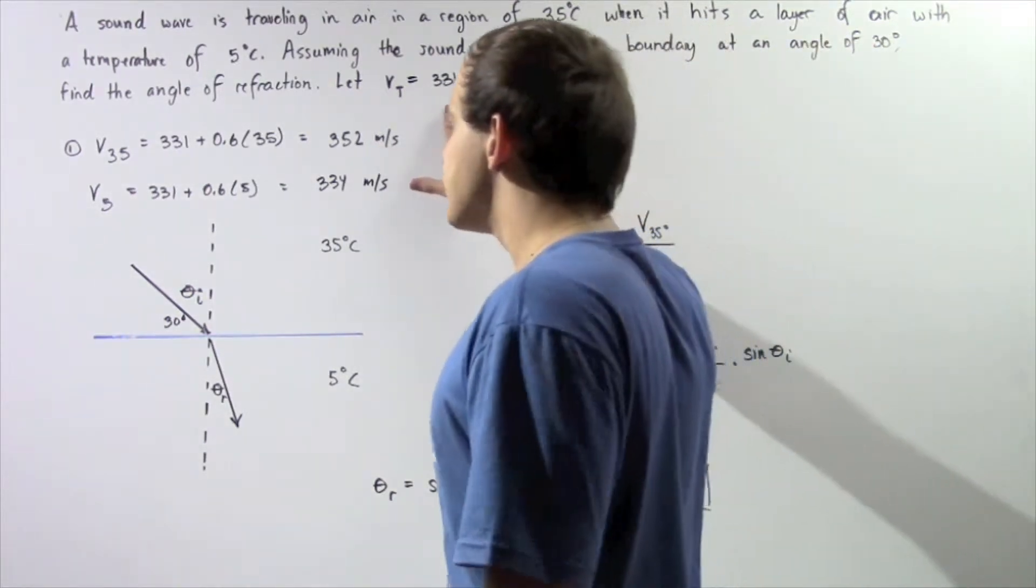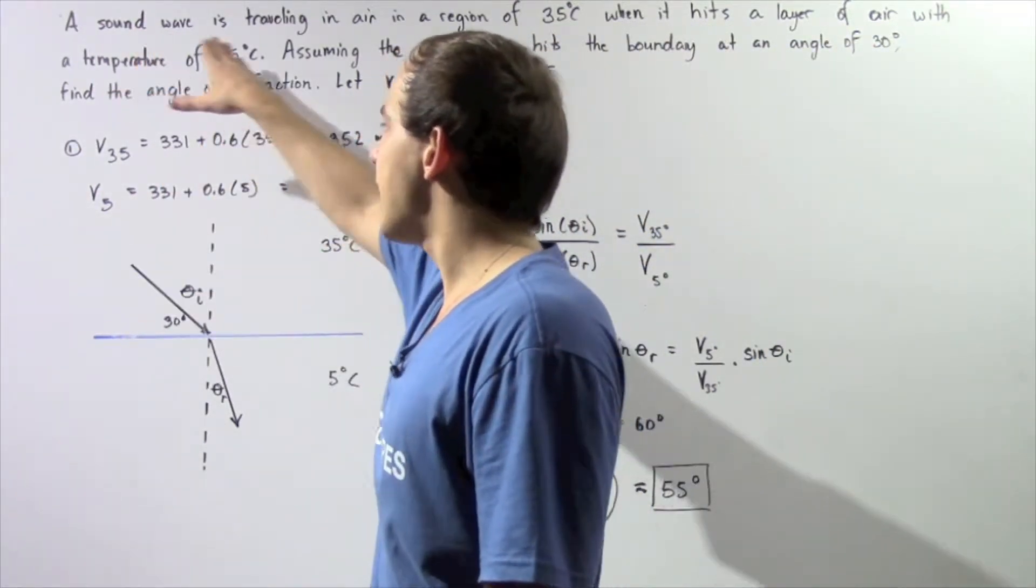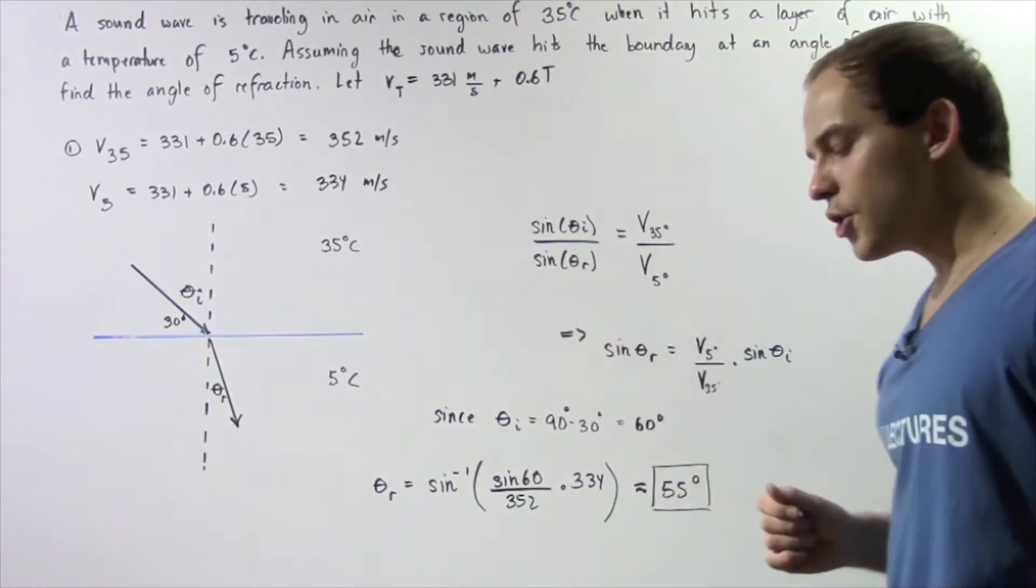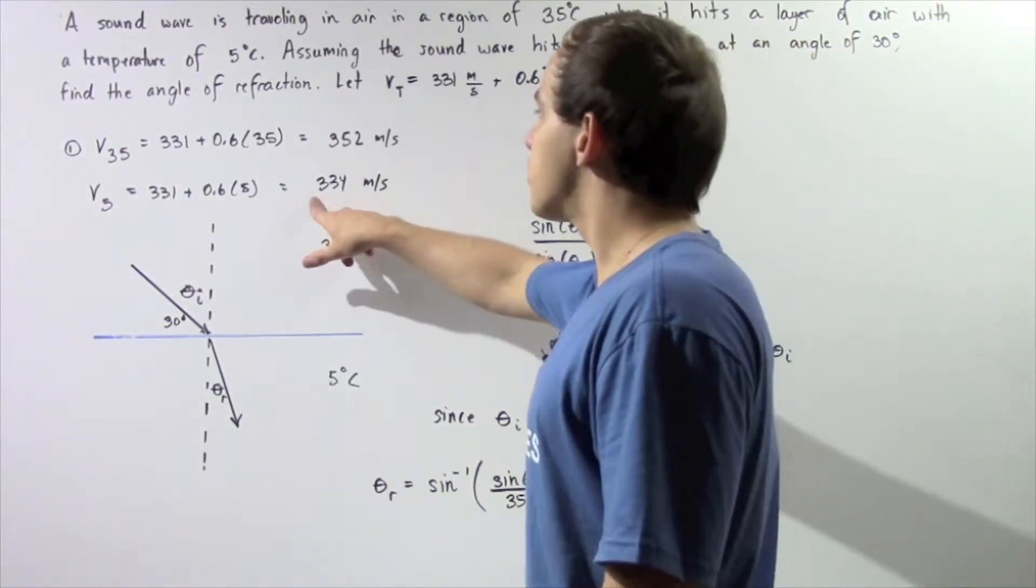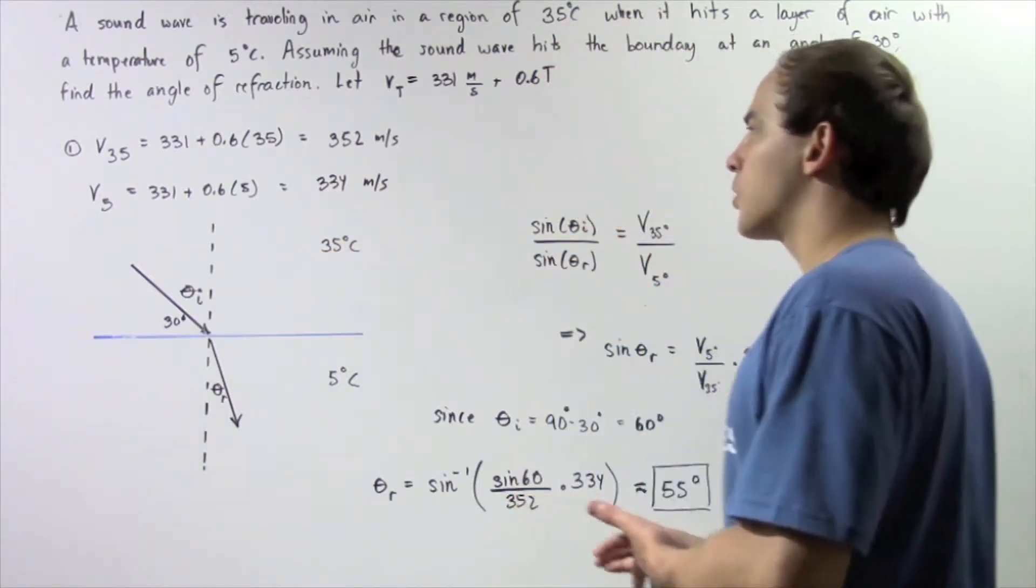Now let's use the same equation to find the velocity of our sound wave at 5 degrees Celsius. 331 plus 0.6 times 5 gives us 334 meters per second.